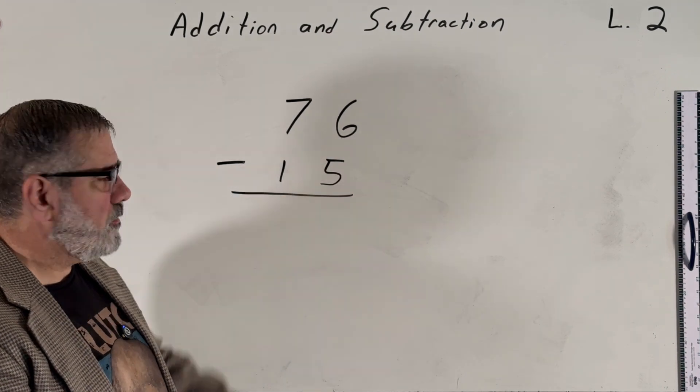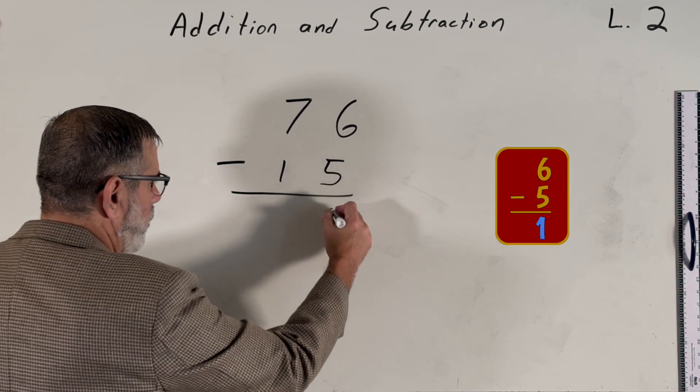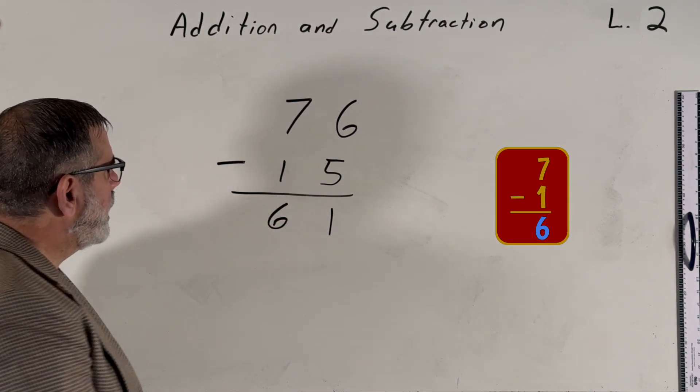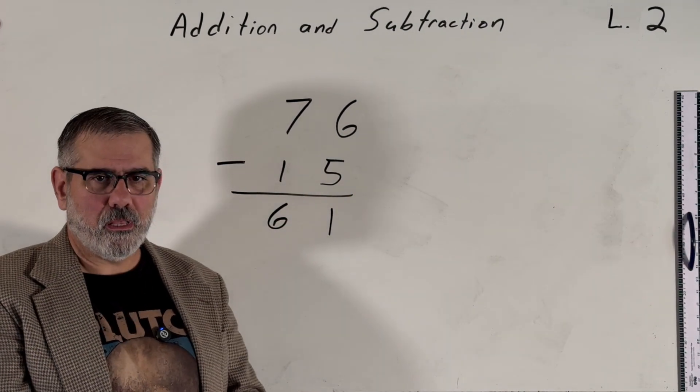So 6 minus 5 is 1. Write the 1 right here. 7 minus 1 is 6. Write the 6 right here. And so 76 minus 15 is 61.